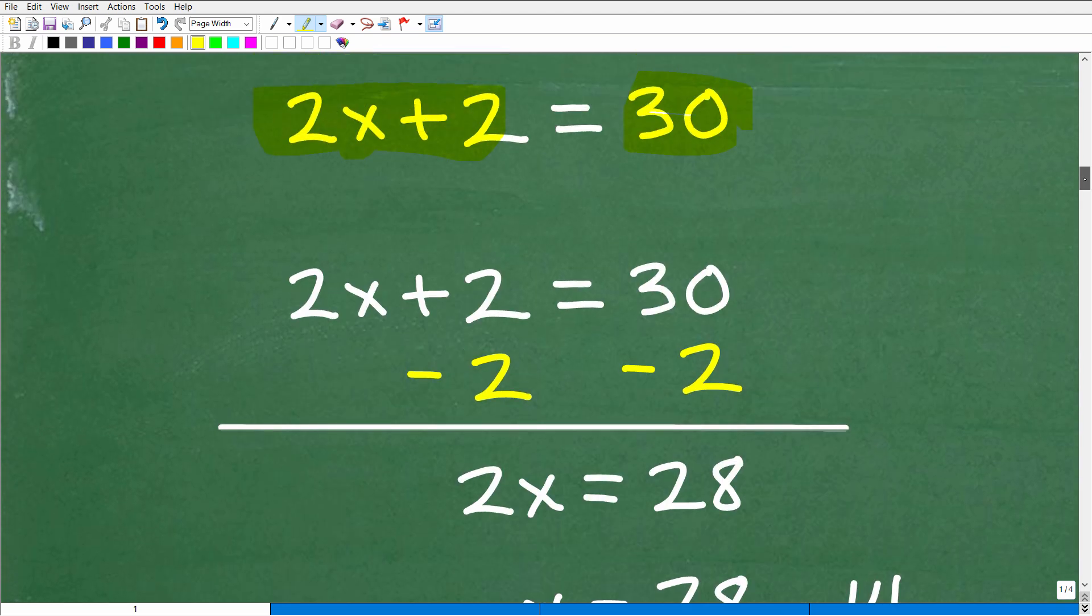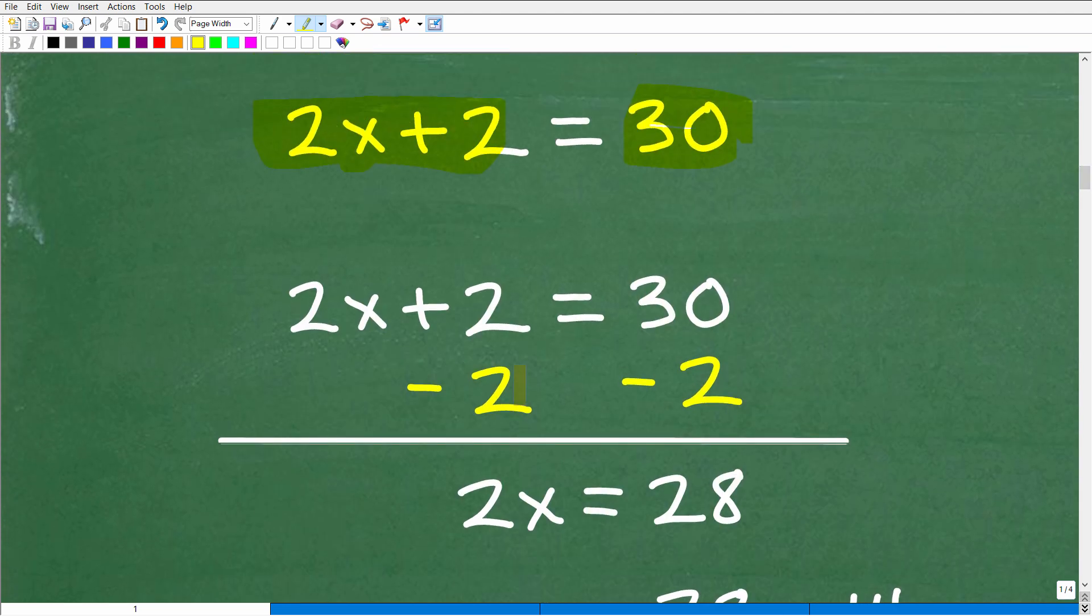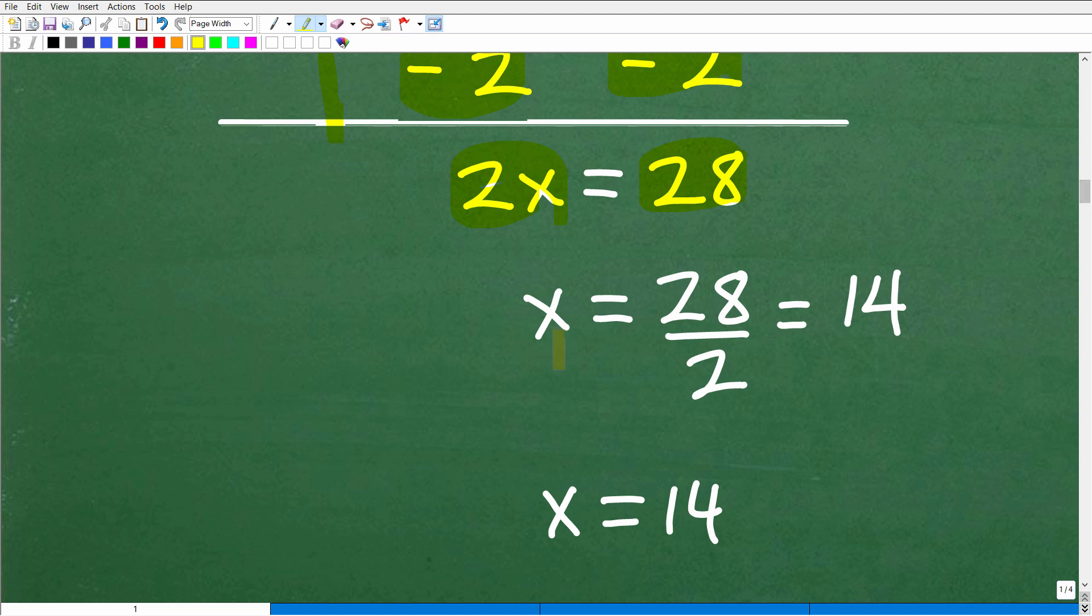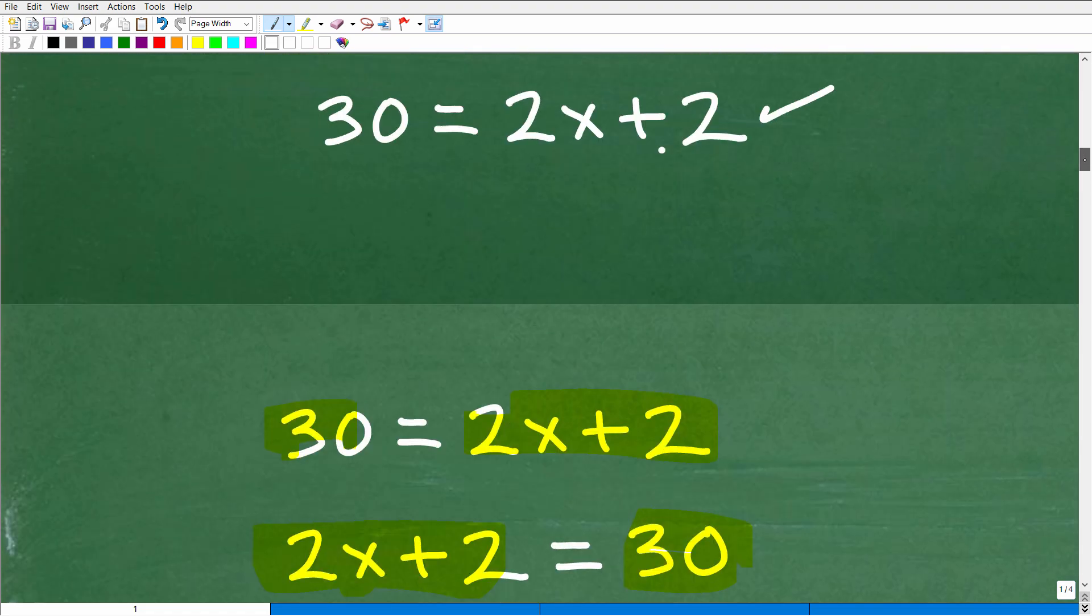We're simply going to subtract 2 from both sides of the equation. That gives us 2x is equal to 30 minus 2, which of course is 28. Now we're going to divide both sides of the equation by 2, so we're going to get x is equal to 28 divided by 2, or 14. So x is equal to 14.